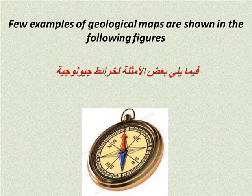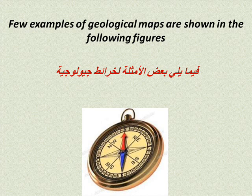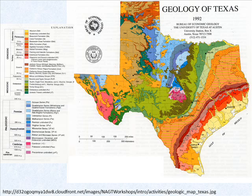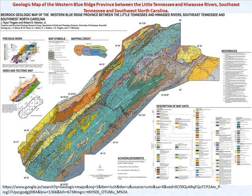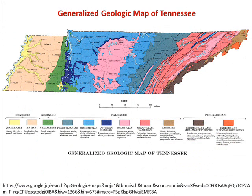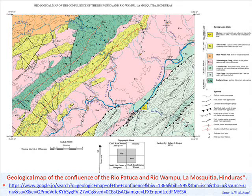Among other uses, a few examples of geological maps are shown in the following figures: geologic map of Texas; geologic map of the Western Blue Ridge province between the Little Tennessee and U.S.C. rivers, southeast Tennessee and southwest North Carolina; generalized geologic map of Tennessee; and a geological map of the confluence of the Rio Patuca and Rio Wampo-La Musiquetia, Honduras.